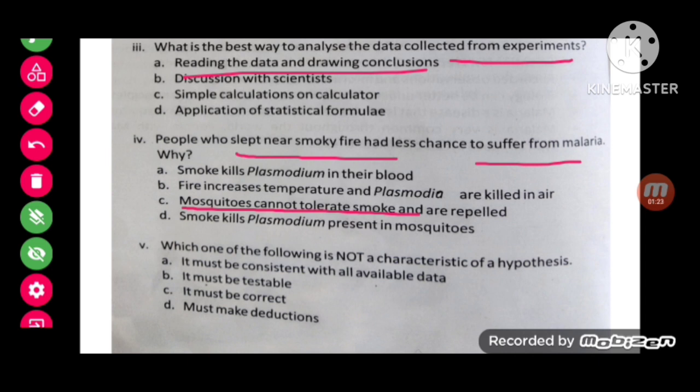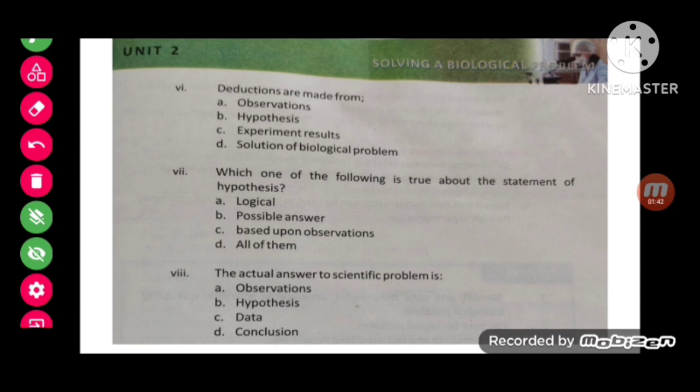Next MCQ: which one of the following is not a characteristic of a hypothesis? The answer is option 3: it must be correct. A hypothesis doesn't have to be correct; it can also be incorrect. Next MCQ: deductions are made from hypothesis.